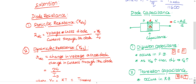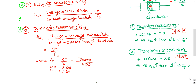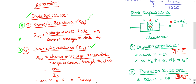Now let us see the extension on diode resistance and diode capacitance. Diode resistance is of two types: static resistance and dynamic resistance. Static resistance is also known as DC resistance of the diode, denoted with capital R_dc. Dynamic resistance or AC resistance is denoted with small r_ac.